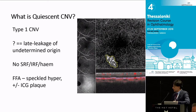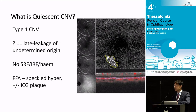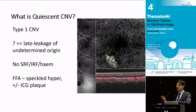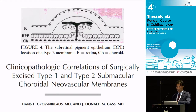Quiescent CNV is a form of type 1 CNV. If you look at the fellow eye, you will see a shallow separation between the RPE and Bruch's membrane that is medium hyperreflective with no fluid. The patient may be relatively asymptomatic. On fluorescence there may be some very late, slight speckled leak — probably the correlate of what was historically called late leakage of undetermined origin. There may also be a plaque on ICG.